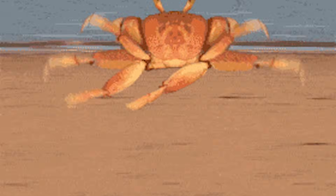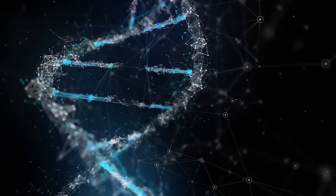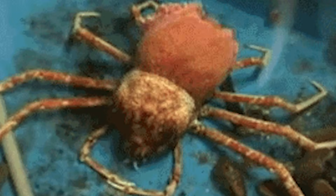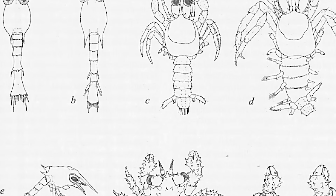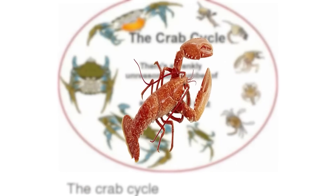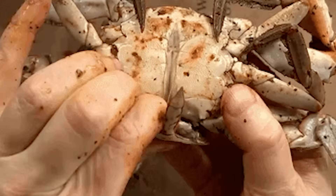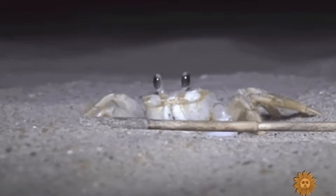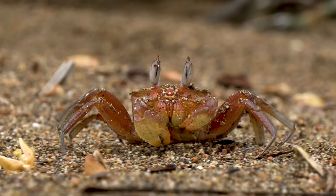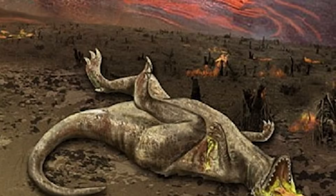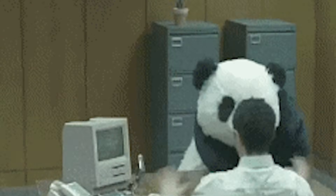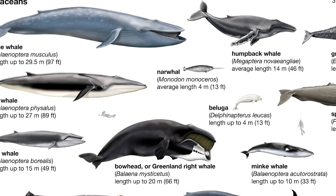Seven different groups of crabs independently decided that crab life wasn't for them and went back to looking more like their non-crab ancestors. This can happen because crabs are weirdly flexible in evolutionary terms — their body plan isn't locked in the way it is for most animals. If being flat and compact stops being useful, crabs can apparently just reconfigure themselves without everything falling apart. The crab form isn't some end goal or final stage of evolution; it's just a really good solution to certain problems, and when those problems change, crabs can bail on the whole thing.